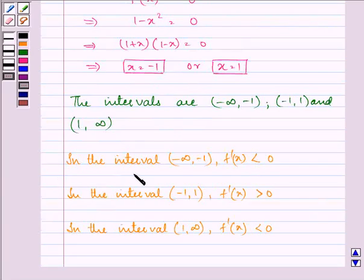So, we found out that in the interval minus infinity to minus 1, the value of f dash x is less than 0. In the next interval, it is greater than 0. In the third interval, again, it is less than 0.